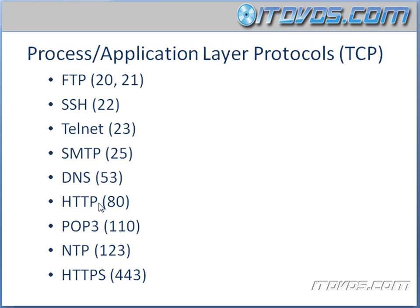HTTP is what you use to browse the internet, and that's on port 80. POP3 is what you use to check your email if you're using POP3 — that's on port 110. NTP, the network time protocol, works on port 123 and is used to sync your computer's clock with a time server. HTTPS is on port 443, which is HTTP traffic encrypted using SSL, also known as secure socket layer.